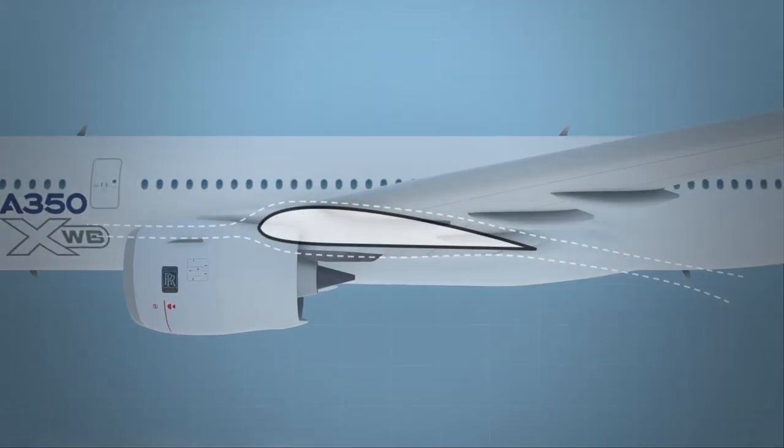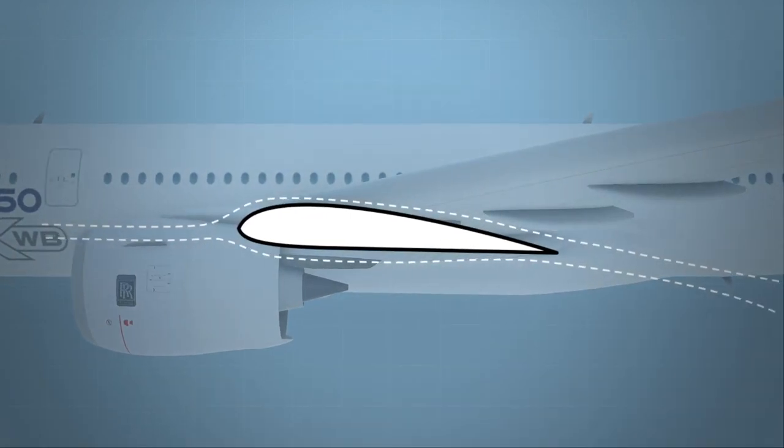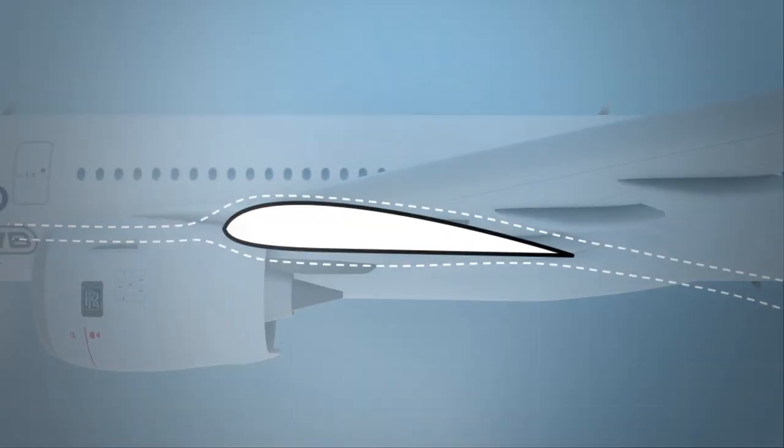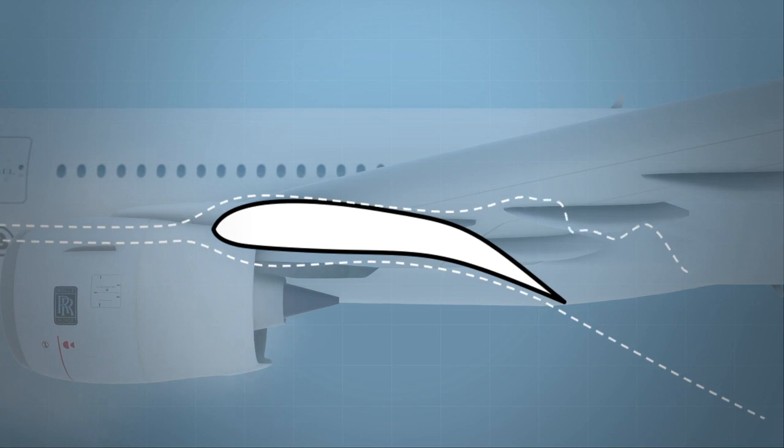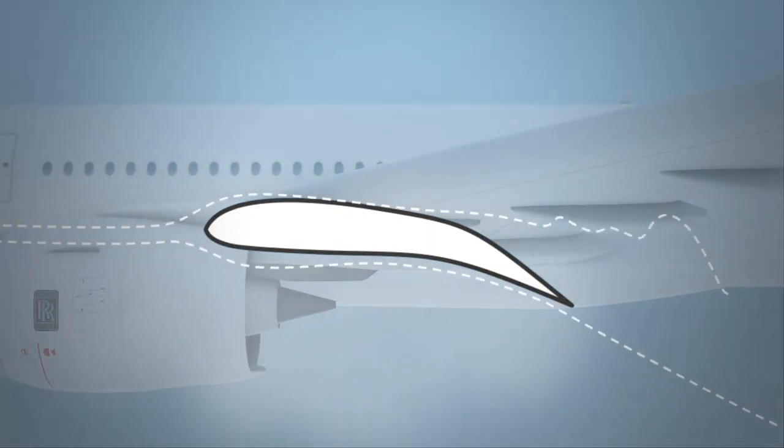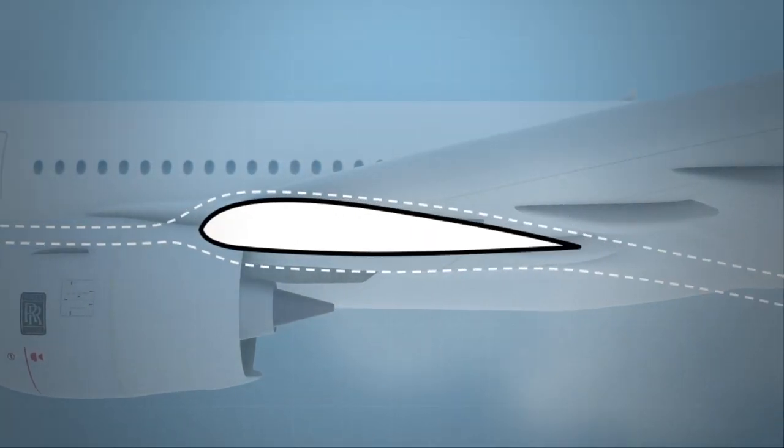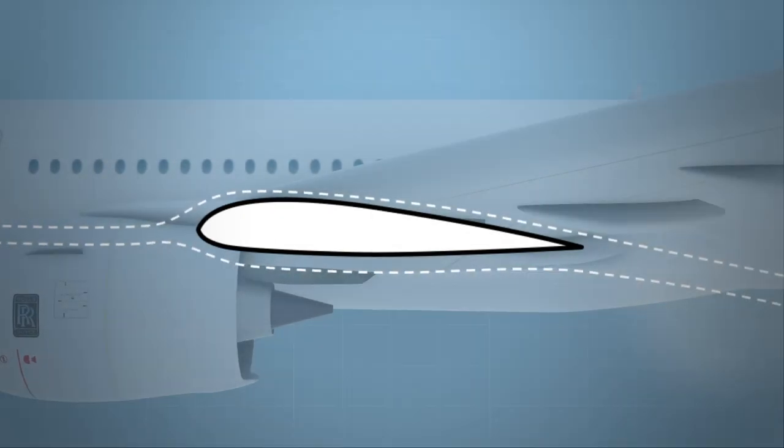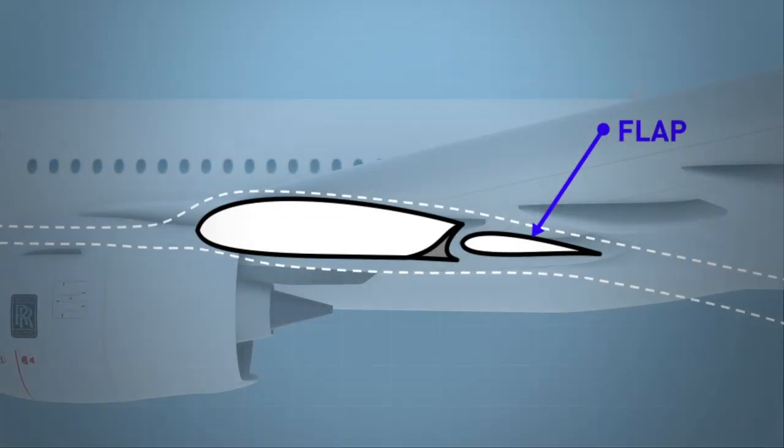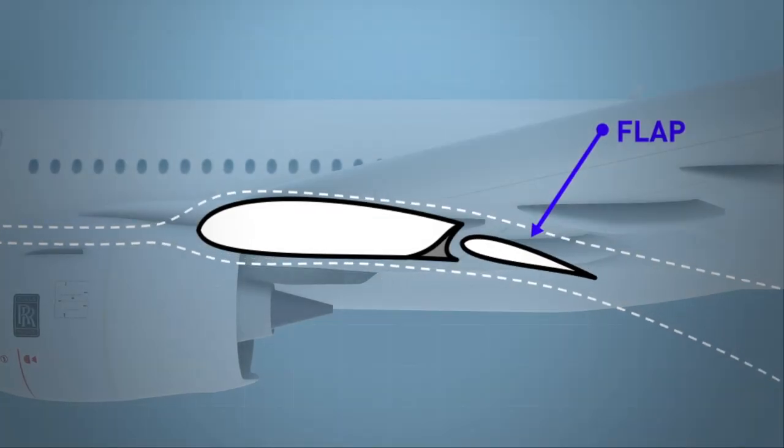You already know that aerofoils can generate more lift by increasing the camber, but too much camber can cause flow separation which results in drastic increase in drag. In order to manage this effect, engineers invented a movable flap to optimise the camber of the wing for different flight stages.